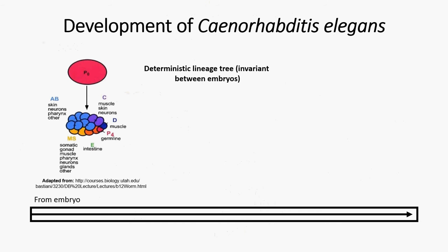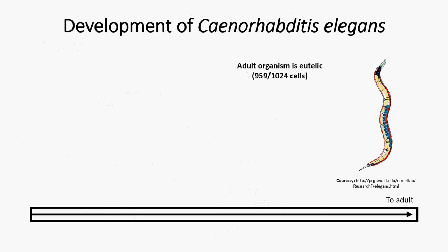The development of C. elegans — why are we interested in it? Because it's a deterministic system. It produces a deterministic lineage tree, which is invariant between embryos. So we go from embryo all the way to adulthood, and in between we look at the cells and how they differentiate from single developmental cells into whole tissues. The adult organism is eutelic, with a fixed number of cells in each worm, so we can theoretically trace every cell in the worm from its inception in the embryo to the adult form.